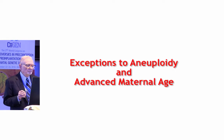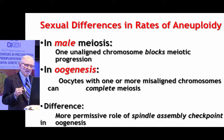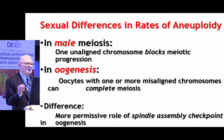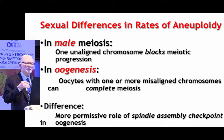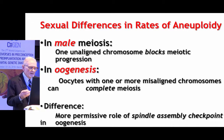I'd like to conclude by discussing some exceptions to aneuploidy and advanced maternal age. One exception is the sex differences in the rates of aneuploidy between males and females. In male meiosis, it appears that only one unaligned chromosome will block the entire meiotic progression. In contrast, in oogenesis, an oocyte with one or more misaligned chromosomes can complete meiosis. The spindle assembly checkpoint in oogenesis seems to be more permissive than that of the male.